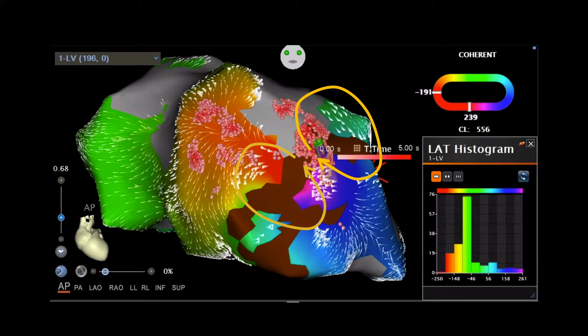In this figure, we see coherent mapping during ventricular tachycardia. Usually, we use multi-electrode mapping for generation of coherent mapping to have more points and more detailed map of the VT or other type of arrhythmia.